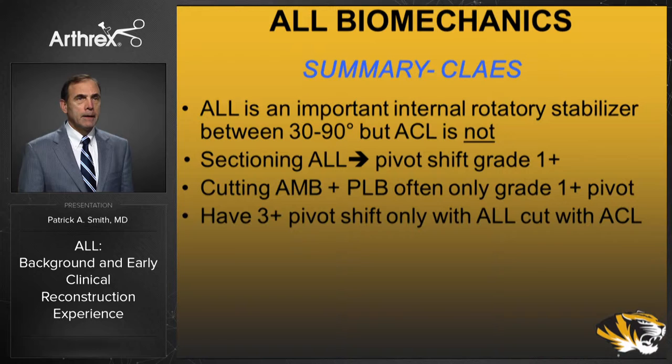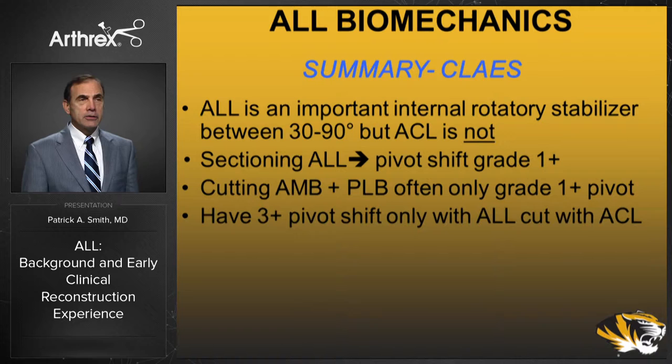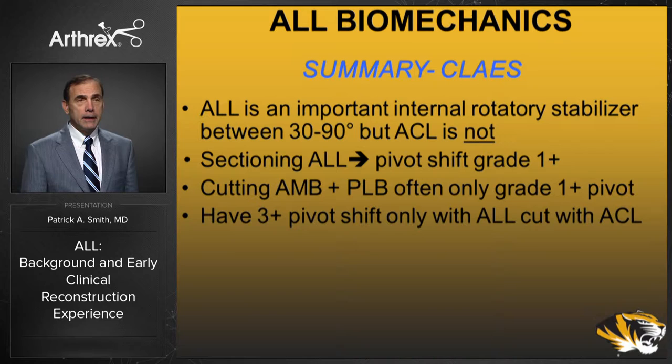Kleiss felt the ALL was an important internal rotatory stabilizer primarily between 30 and 90 degrees of knee flexion. Sectioning the ALL alone sometimes led to a one plus pivot shift even with an intact ACL, and cutting the ACL sometimes produced only a one plus pivot. It was when the ALL was cut together with the ACL that the three plus pivot shift appeared, establishing that relationship between ACL and ALL in producing a markedly positive pivot shift.